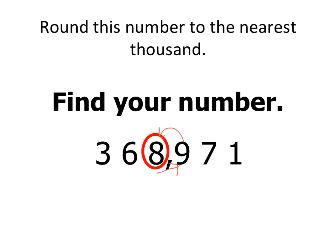5 or more, then add one more. So my 8 will change to a 9, giving me 369,000. And every other number becomes a 0.